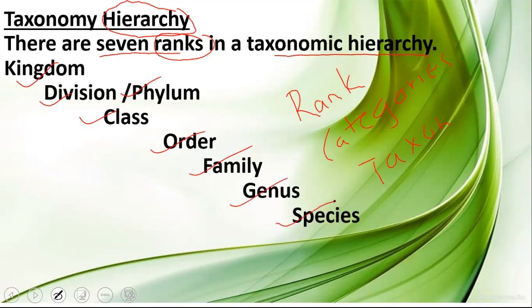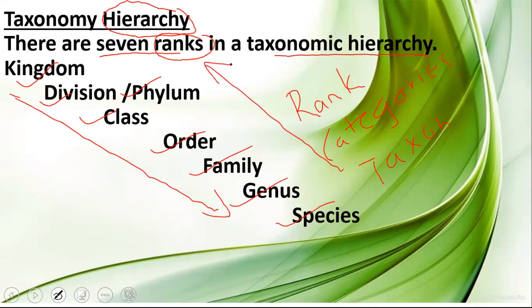Whenever you are classifying an organism, you need to give a correct position for all of the seven ranks associated with that particular organism. And how to memorize? This has to go in order — either in descending order or ascending order. You cannot just mix up the order. So how can we simply memorize the order? There's a short trick related to it.